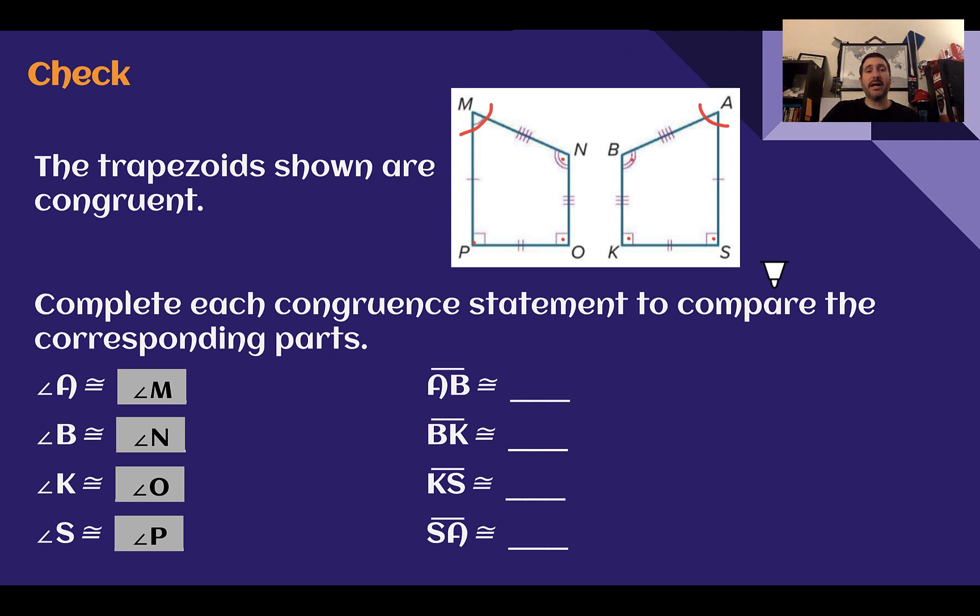For our corresponding sides. A, B corresponds to M, N. We have four tick marks here on the top. B, K has three, so N, O has three. K, S had two tick marks, so O, P had two tick marks. And then S, A had one tick mark, so P, M with one tick mark. I'm attempting to go in a similar orientation as if they are just one figure reflected. So A went to B, M went to N.